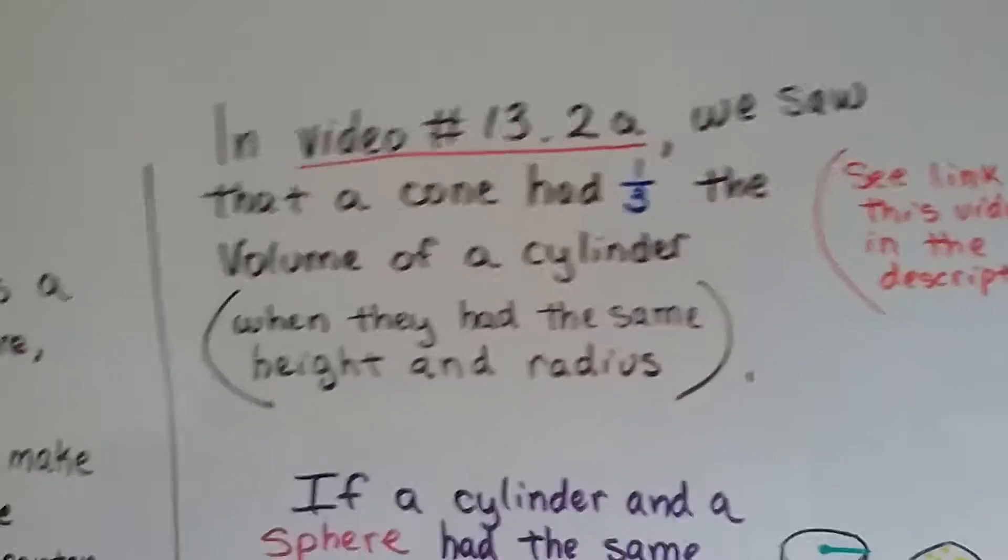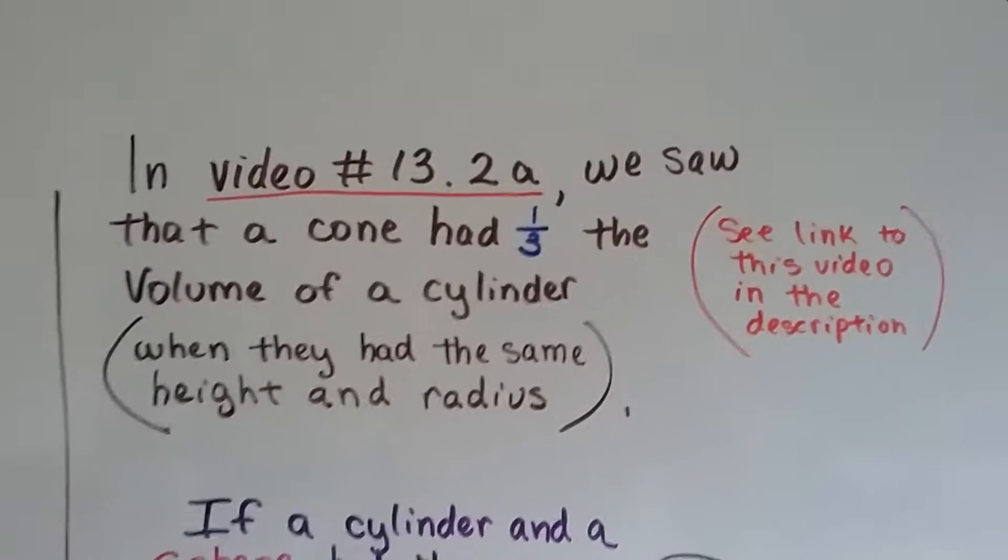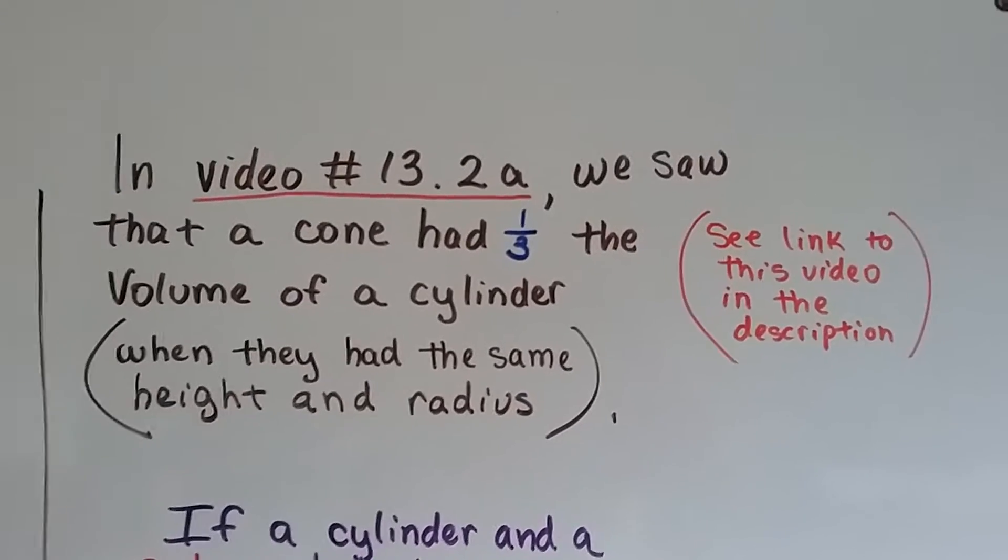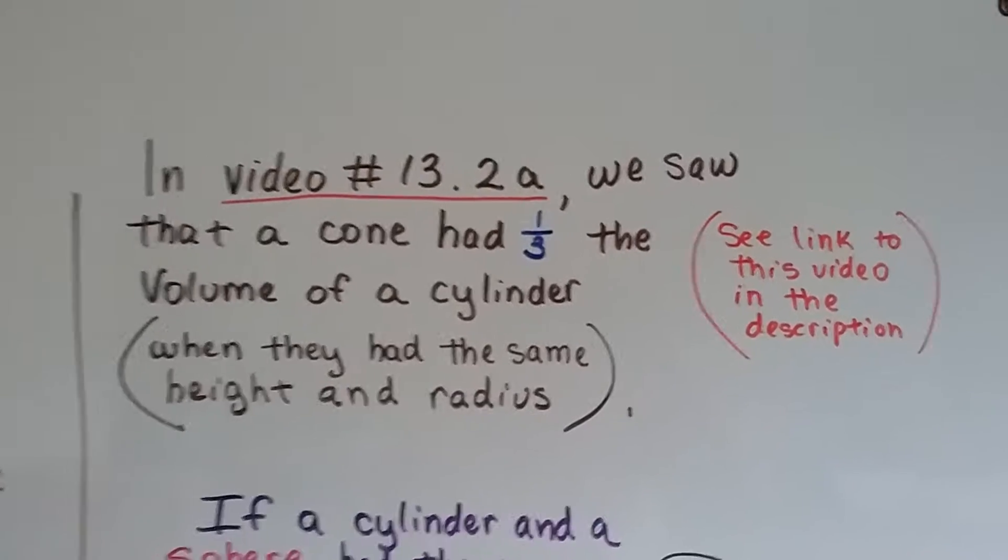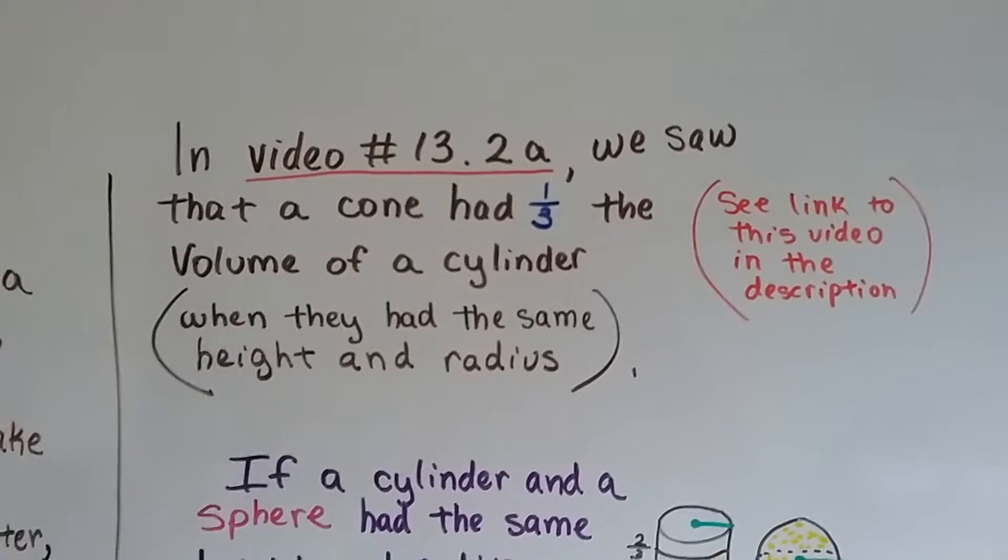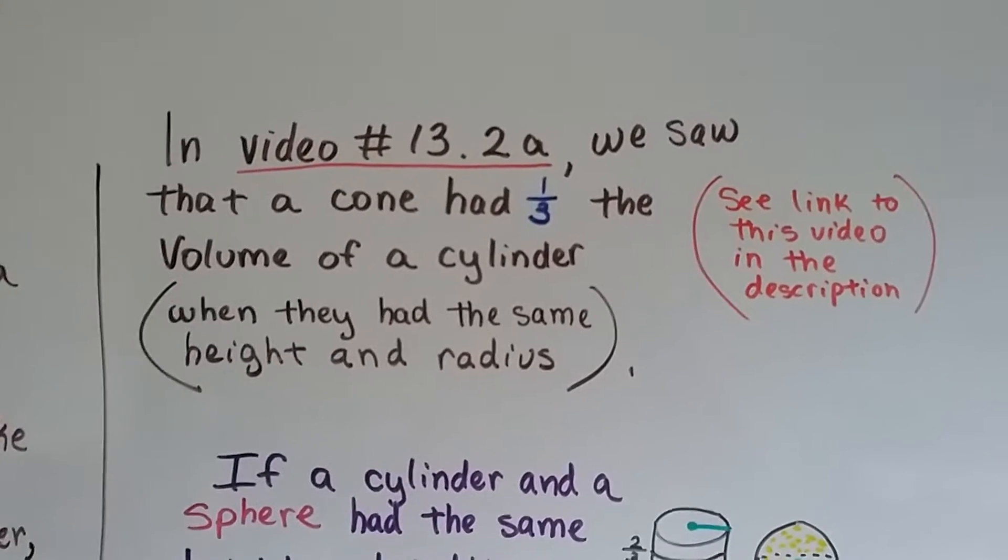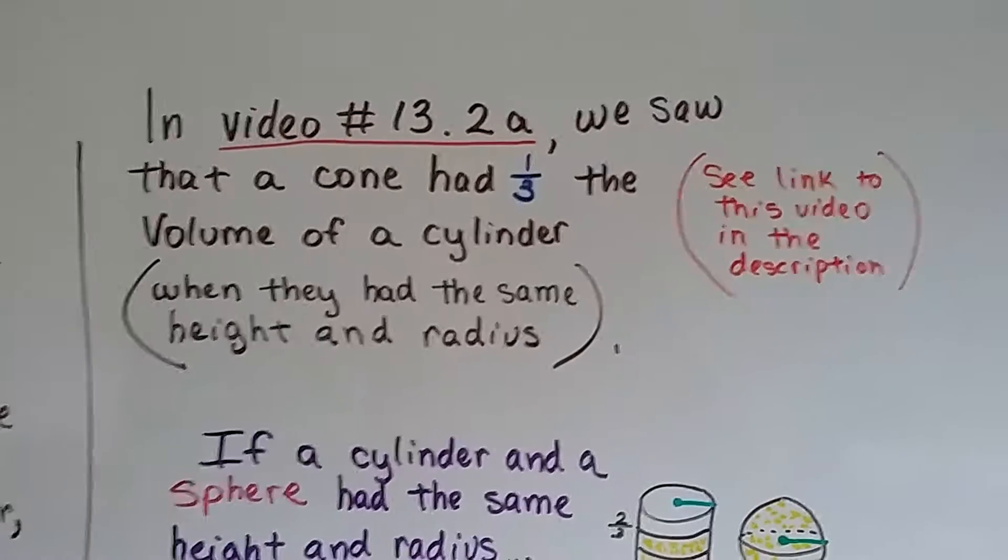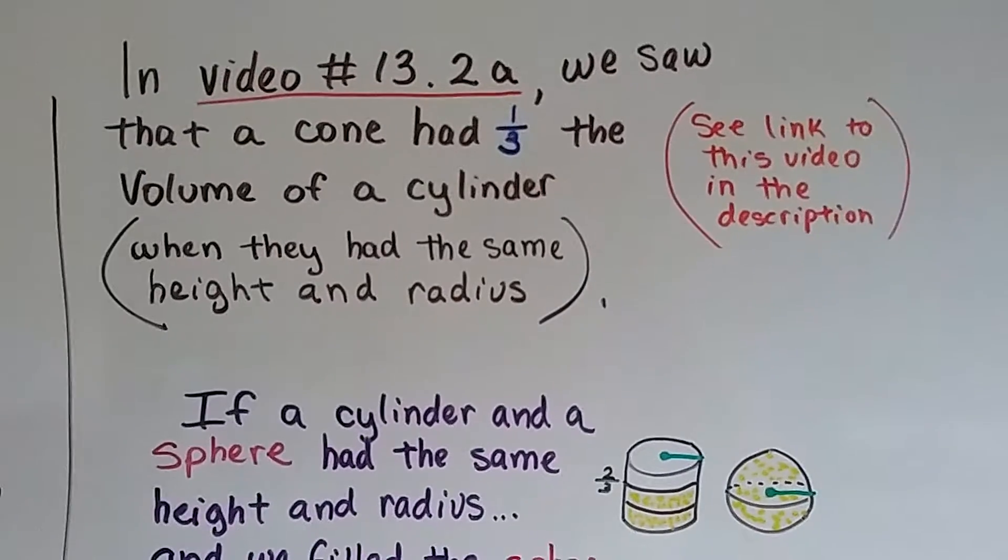In video 13.2a, we saw that a cone had one-third the volume of a cylinder when they had the same height and radius. And there's going to be a link in the description of this video to that one if you haven't seen it. I really wish people would watch my videos in order because I tell something new in each one. And if you watch them in order, you can follow along very easily.